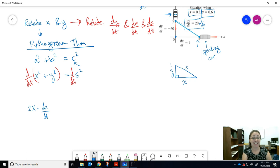So if we take the derivative, derivative of x squared, power rule 2x times the derivative of x with respect to time, so dx/dt. Plus the derivative of y squared with respect to time, so power rule 2y times dy/dt equals same thing on the other side, power rule 2s times ds/dt.